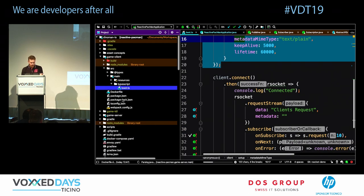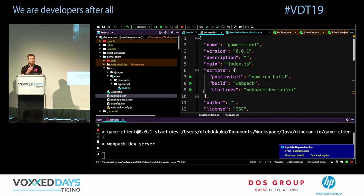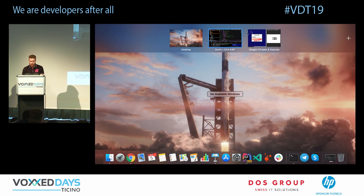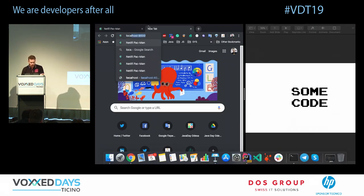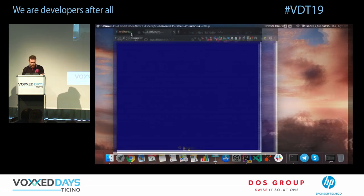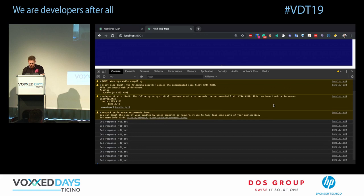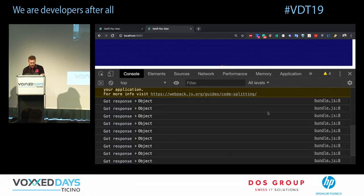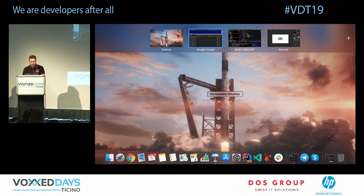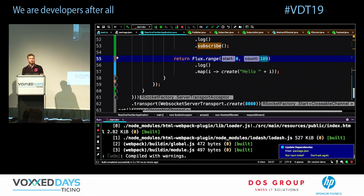Let's run the server and the JavaScript browser application and see if it works. I'll open localhost:8080. All the action is in the console. We can see — I got a connection, logged that in JavaScript, then I got a number of objects as a response. I'm sending 100 messages but only receiving 10. That's back pressure working!